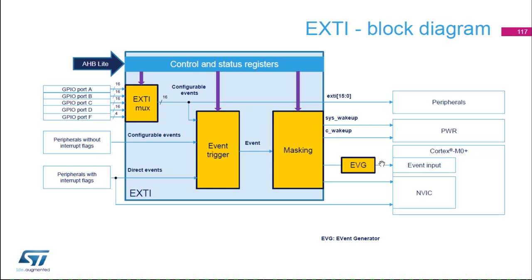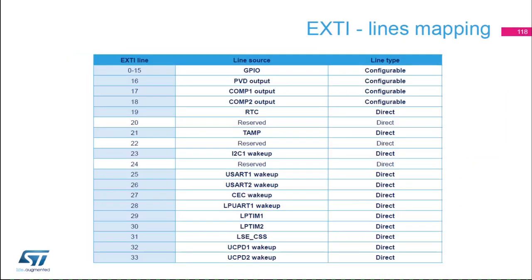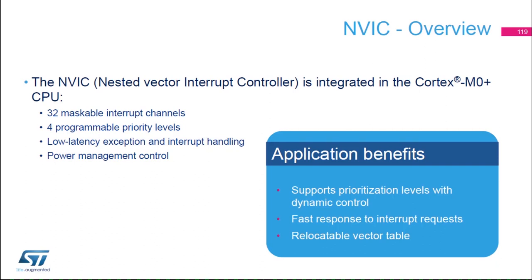This table summarizes the lines mapping for the EXTI. Lines 0 to 18 cover GPIOs, PVD, and comparators — these lines are configurable. From line 19 to 33, those are direct links coming from other peripherals like RTC, TMP, I2C, UART, and UCPD.